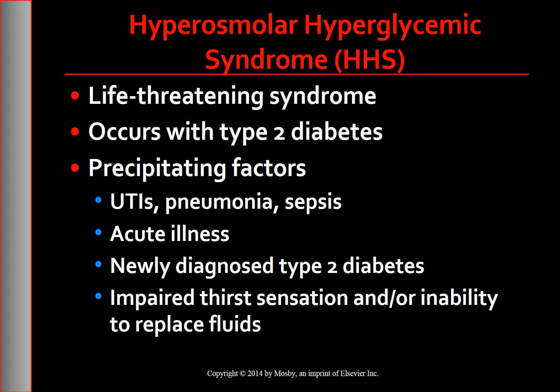HHS, or hyperosmolar hyperglycemic syndrome, is a life-threatening syndrome that can occur in the patient with diabetes who is able to produce just enough insulin to prevent DKA, but not enough to prevent severe hyperglycemia, osmotic diuresis, and extracellular fluid depletion.